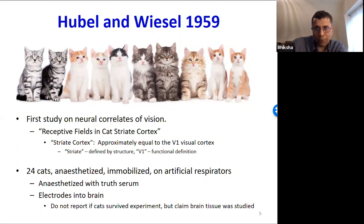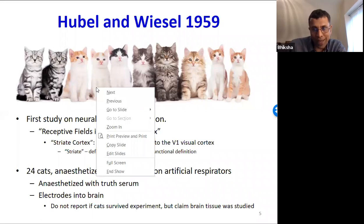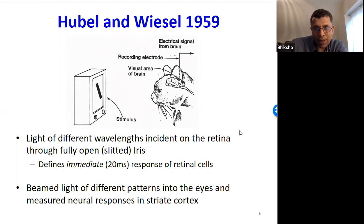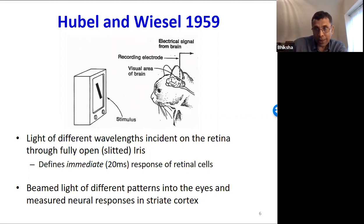Hubel and Wiesel analyzed the response of the striate cortex to visual stimuli. They experimented with 24 cats: the cats were anesthetized, electrodes were placed in their brains to take readings — the brain tissue was studied afterward, so we can guess whether the cats survived. The cat's irises were held open mechanically, then light of different wavelengths and patterns — lines, dots, etc. — was beamed through the eye onto the retina, and cortical neuron responses were measured.